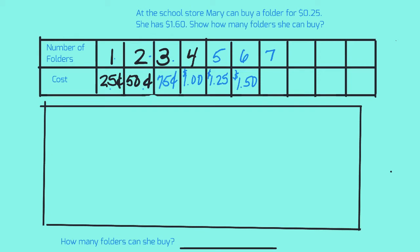How much would that cost? Get ready... one seventy-five. Does she have enough money to buy seven? No, she only has a dollar sixty, so she can only buy six folders.